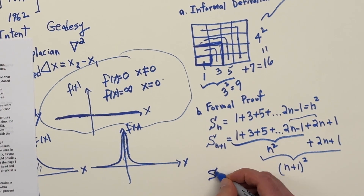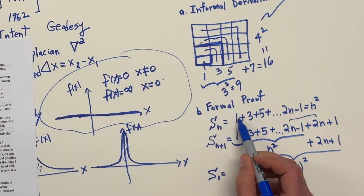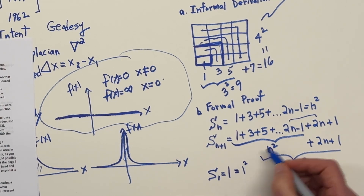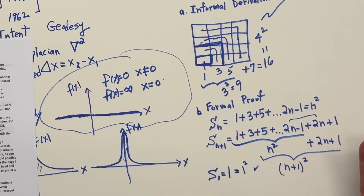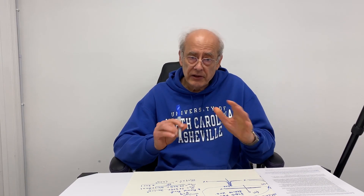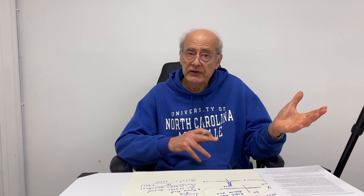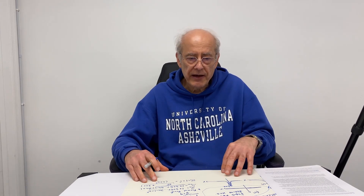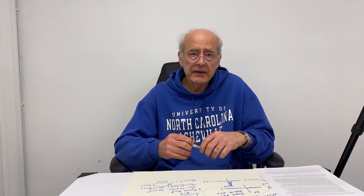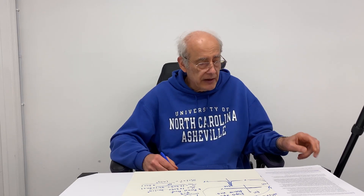Now we have to show it's true for the first case. For n equals 1, the sum is just 1, and 1 squared equals 1. It is true. So it's proven in general. In our course, even though many derivations will be acceptable to mathematicians, some will not be, and we're not going to worry about which type of proof it is when we demonstrate things.